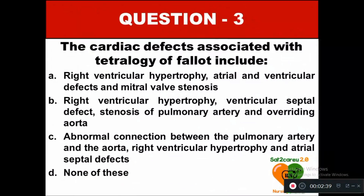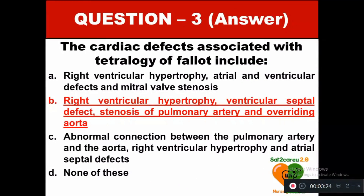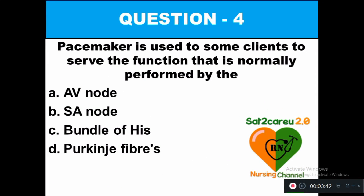Question 3: The cardiac defects associated with tetralogy of Fallot include: option A right ventricular hypertrophy, atrial and ventricular defects, and ventricular wall stenosis; option B right ventricular hypertrophy, ventricular septal defect, stenosis of pulmonary artery, and overriding of aorta; option C abnormal connection between pulmonary artery and aorta, right ventricular hypertrophy, and atrial septal defects; option D none of these. The right answer is option B — these four defects are associated with tetralogy of Fallot.